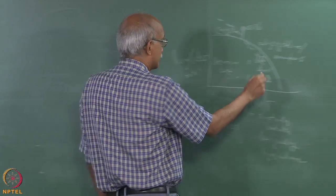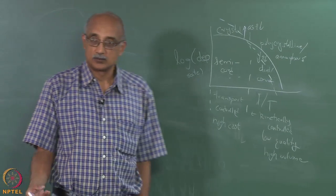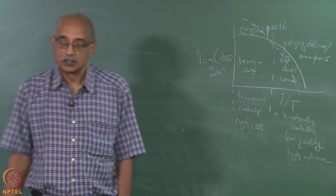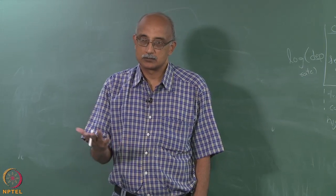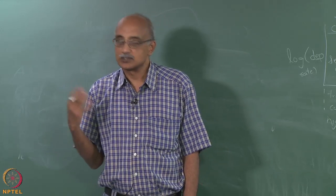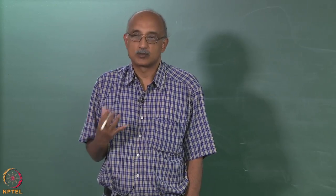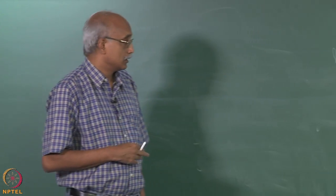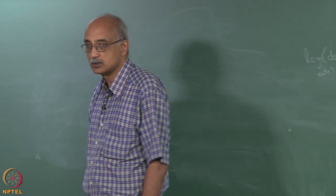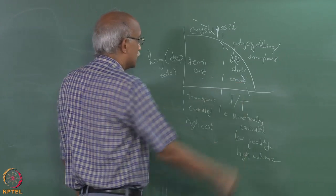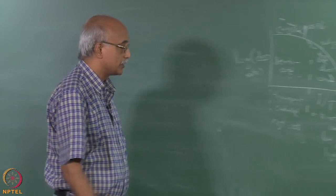Changing the concentration of the reacting species also affects deposition. In the transport-controlled regime, doubling the concentration produces a corresponding increase in deposition rate. In the kinetic-controlled regime, it will still increase, but as you approach the dew point it will start converging. These qualitative dependencies of deposition rate on temperature, pressure, and concentration are important to understand for process design.